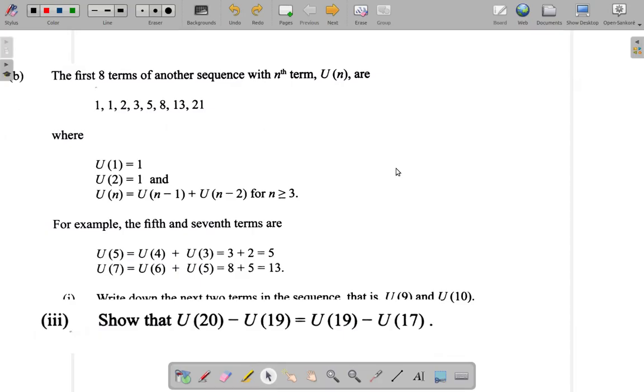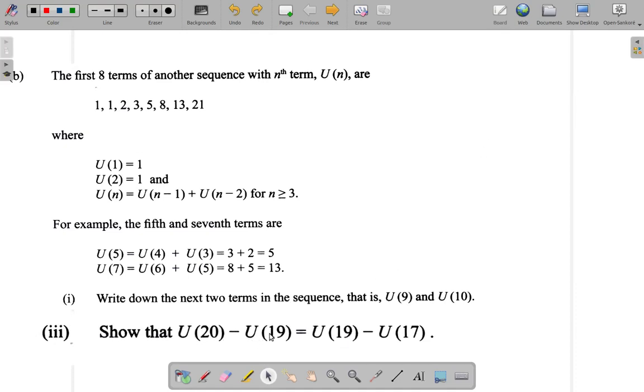All right, let's look at part B of this question. It says, show that U20 minus U19 is equal to U19 minus U17. Let's see.